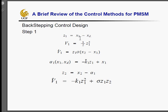In the first step, define z1 equal to x1 minus xd, where xd is the desired angular speed trajectory. So z1 is the error signal. It's the most important thing that we are considering. First, we define the Lyapunov function V1 in this form and take the derivative of V1.